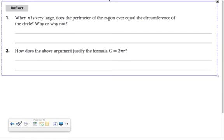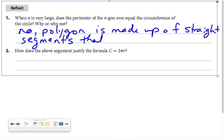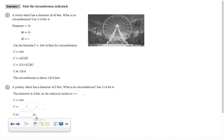So, when N is very large, does the perimeter of the N gone ever equal the circumference of the circle? No, because a polygon consists of sides or straight segments that will not equal a circle.